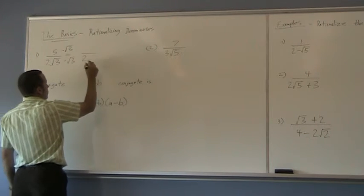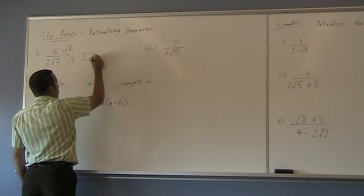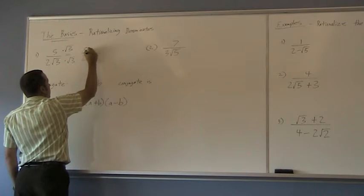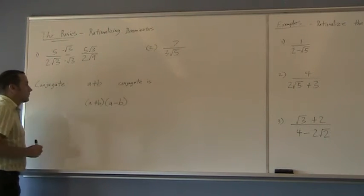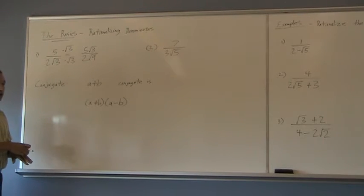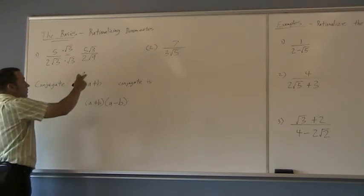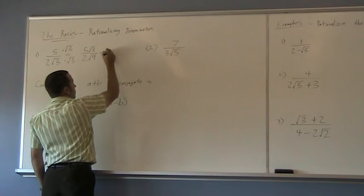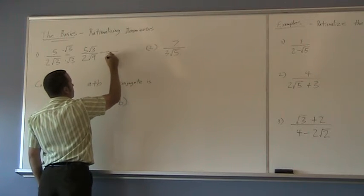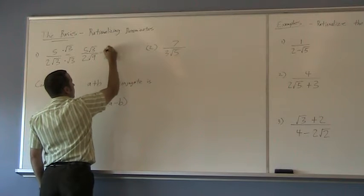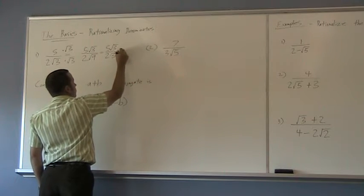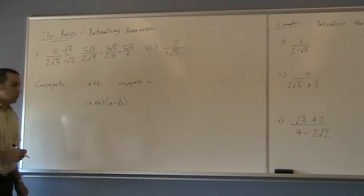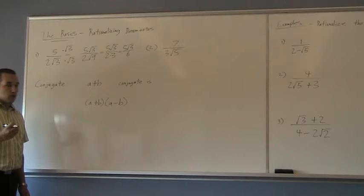√3 times √3 gives me √9. On the top, simply 5√3. √9 is 3. So, I end up with 2 times 3 over 5√3, which is just simply 5√3 over 6. So, now I have a rational denominator.